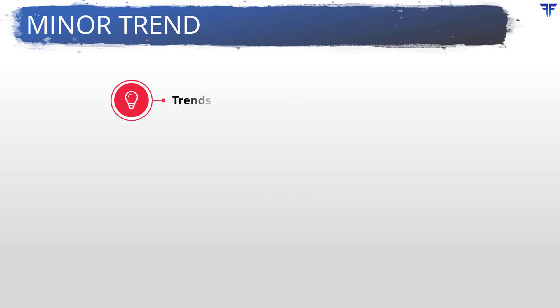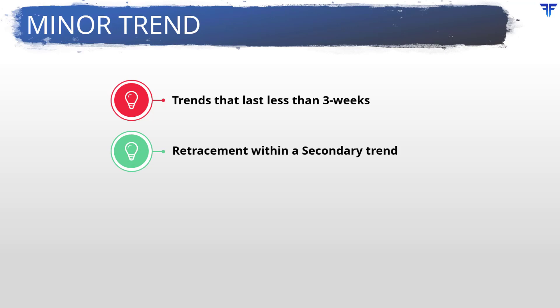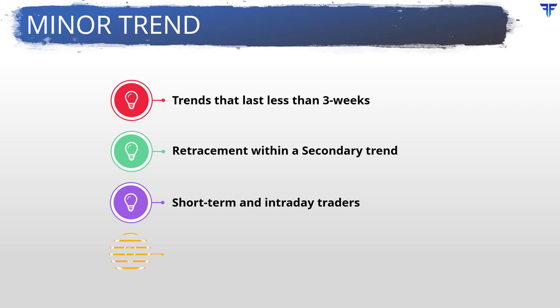Finally, minor trend is a trend that usually lasts less than three weeks and seldom more. A minor trend is a retracement to the secondary trend — in other words, minor trends are price corrections within an intermediate uptrend or price recoveries within an intermediate downtrend. They are trends impacted by the daily ebb and flows of the market, such as news and economic data. These trends are suited to short-term and intraday traders and can be identified on the intraday timeframe.